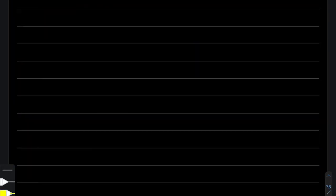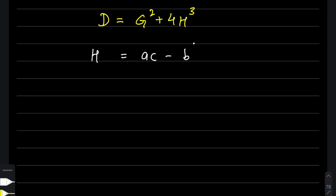I hope the discriminant of a cubic equation did not scare you that much. Let me give you a piece of respite by helping you tame this tiger with a small mnemonic. First, remember that D = g² + 4h³. For remembering h, I give you this suggestion: h for home, ac for air conditioning — home AC without big bills, so h = ac − b².